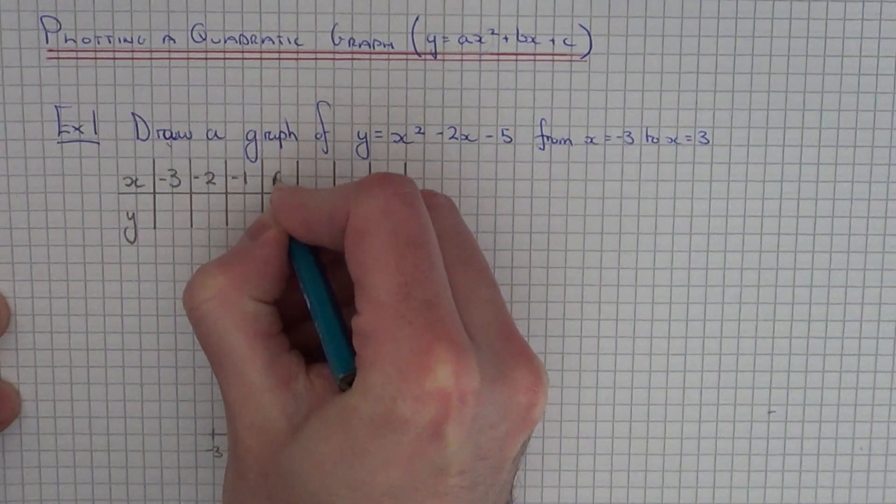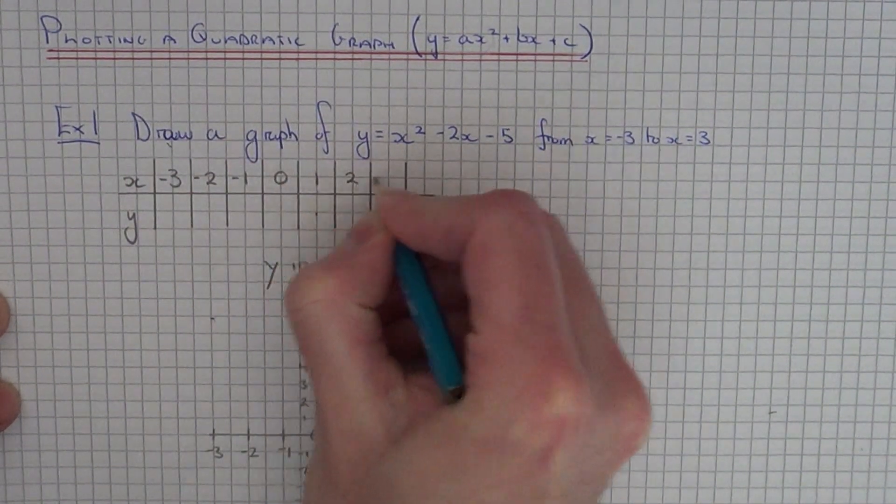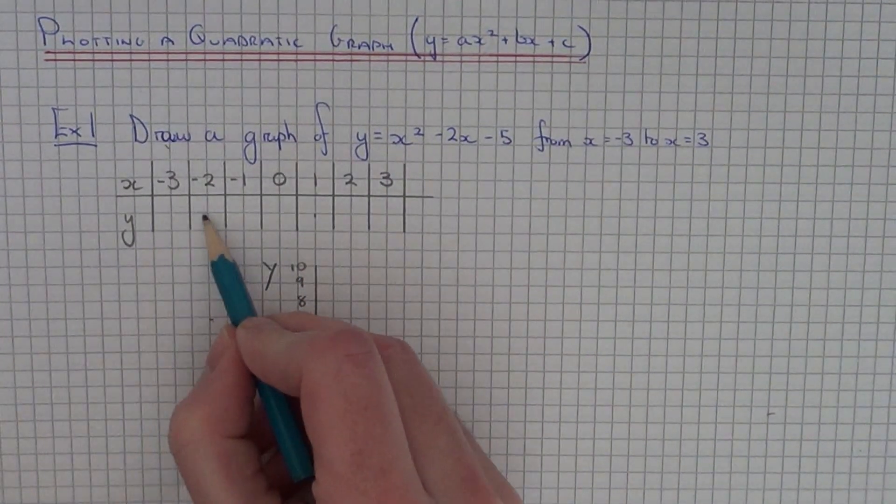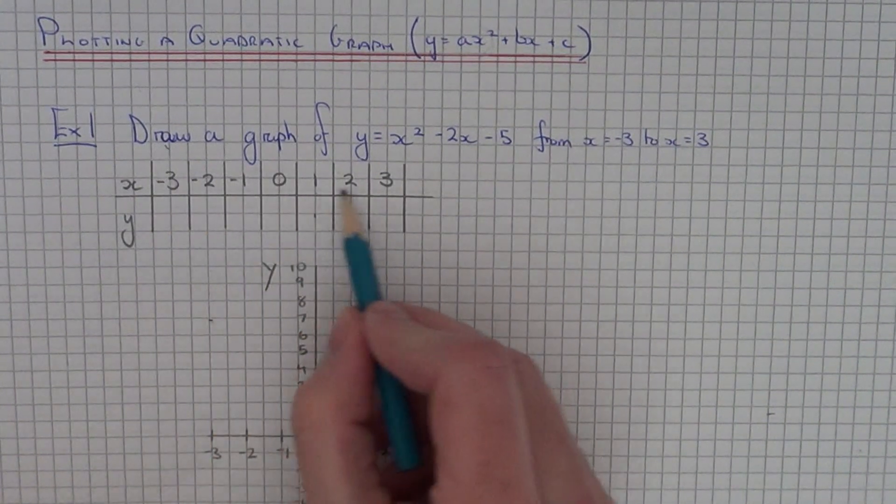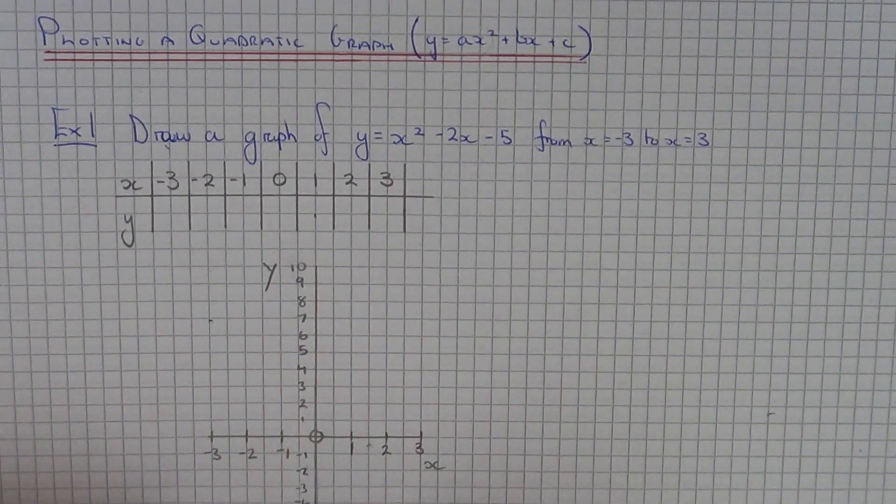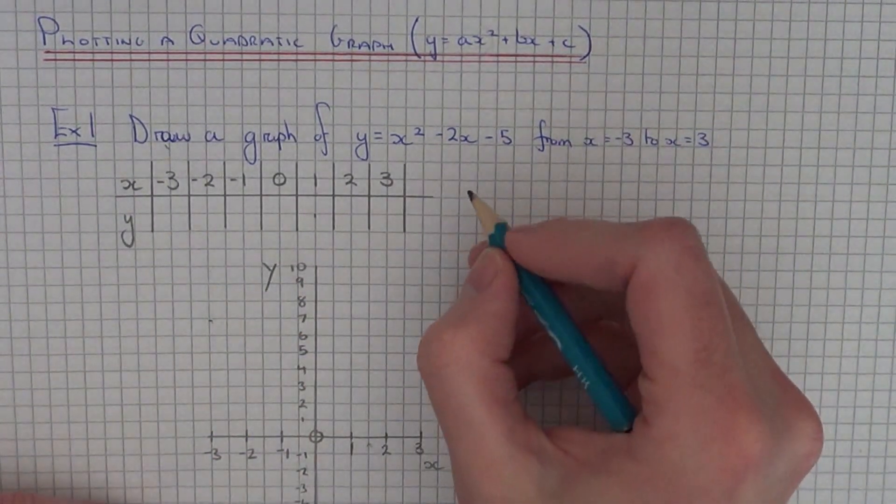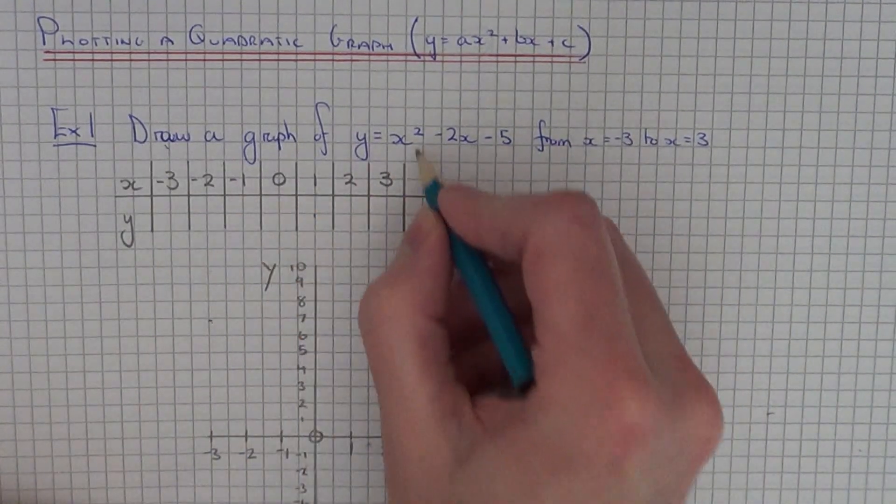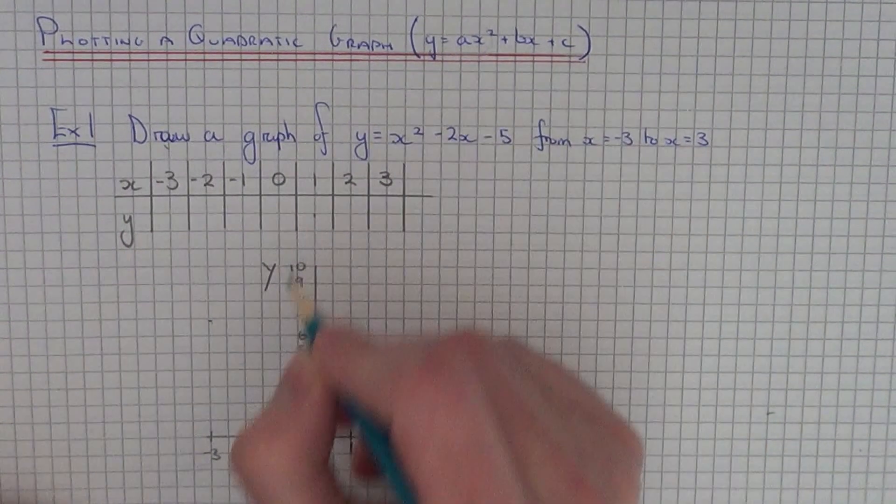So let's just fill these into our table. And all we need to do next is work out the y coordinates for each x value. So I'm going to start off with the positive numbers first of all because these are easy to substitute into this equation.